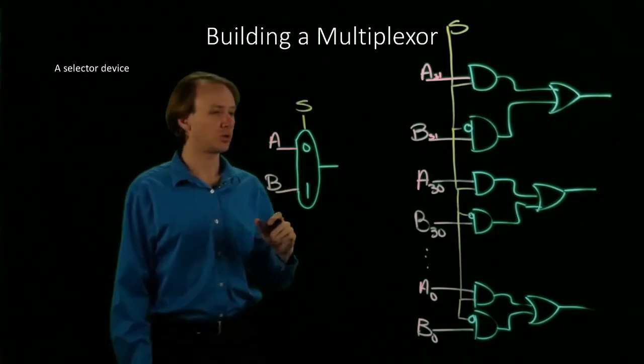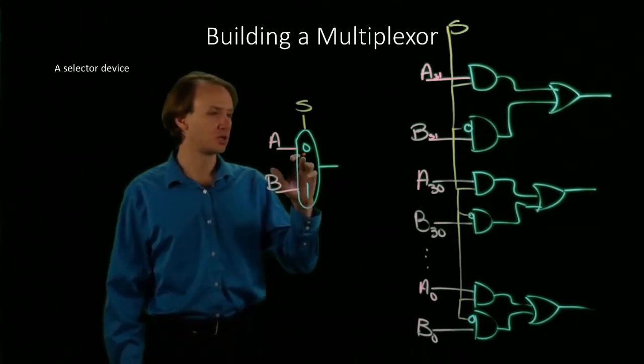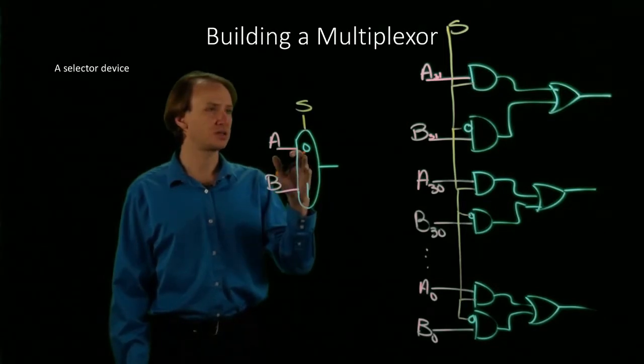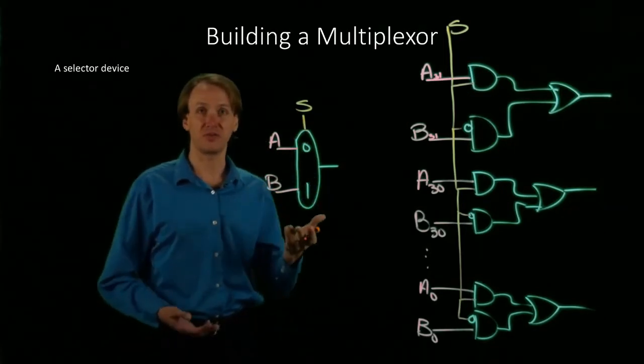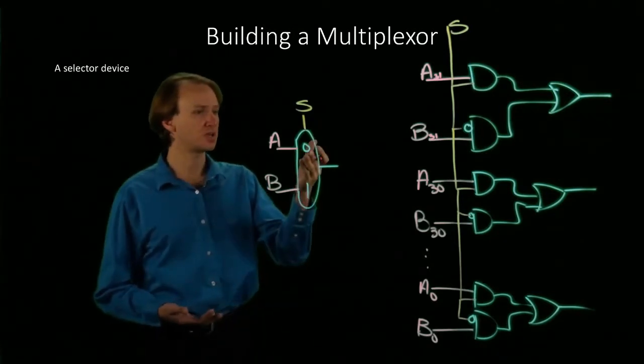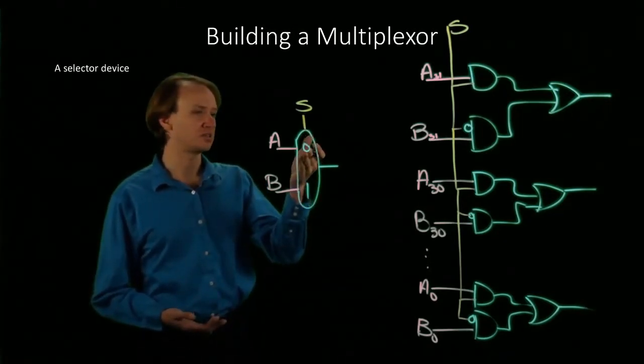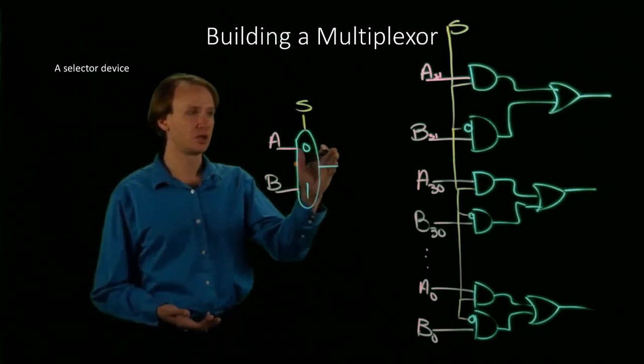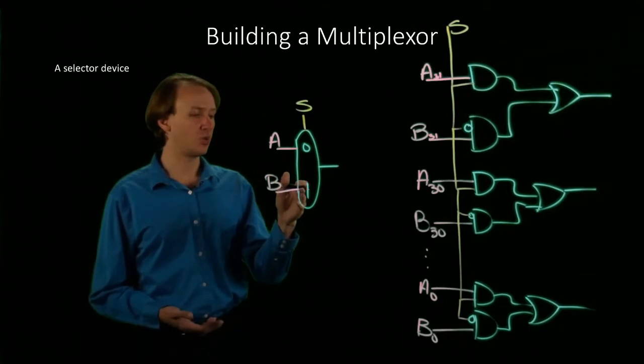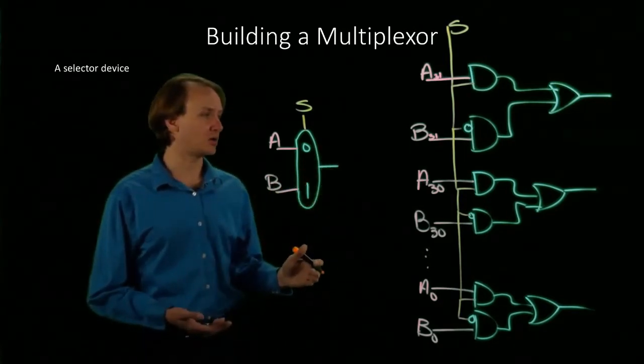And we'll often annotate our multiplexer with a number to indicate the value of a selector bit when we're picking one or the other of these values. So in this case, if my selector bit is 0, then I'm going to pass A on as the results of my multiplexer. If I had set my selector bit to 1, then I'd be passing B on.